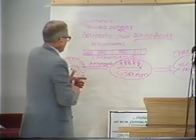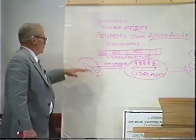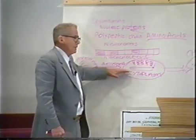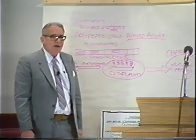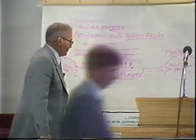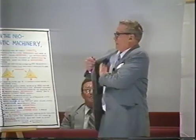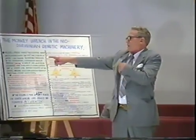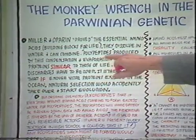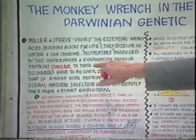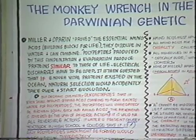Now, when you get your amino acids together, you haven't even started. You've got to get enzymes, some living material in there. You've got to get that stuff to come over here and something to tell it how to straighten out when it gets there, so when it comes over here it's in the right order. Can you imagine that happening by accident? Melanopyrin proves the essential amino acids are building blocks for life. They dissolve in water and can combine; polypeptides produced from this condensation and evaporation produce proteins similar to those of life — not life. Similar to them, no life in them.